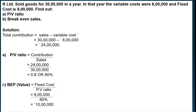Next, we calculate the BEP. BEP = Fixed Cost divided by PV Ratio. Fixed cost is Rs. 8,00,000, divided by PV Ratio of 80% (or 0.8 — whichever is convenient). So, 8,00,000 divided by 80% = Rs. 10,00,000. That is the value of the break-even point.